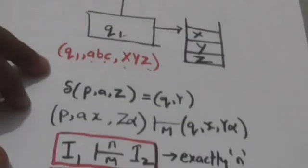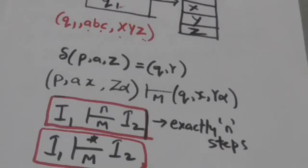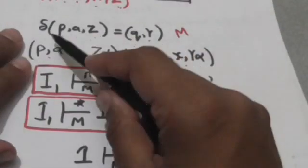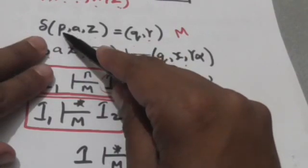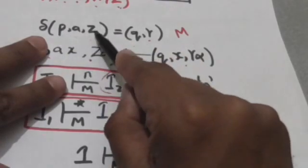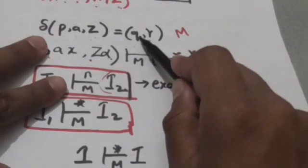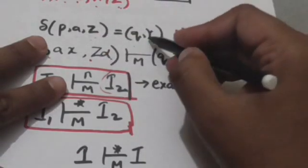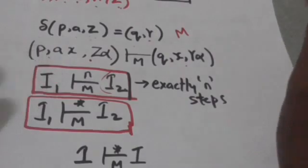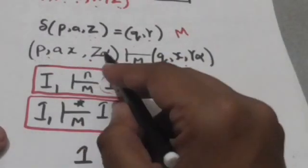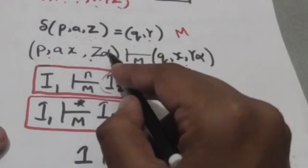Now suppose there is a move in a pushdown automata. When the pushdown automata is in state p and it reads input symbol a, and the stack symbol at the top of the stack is Z, then the pushdown automata will jump to state q and this symbol Z will be replaced by gamma.